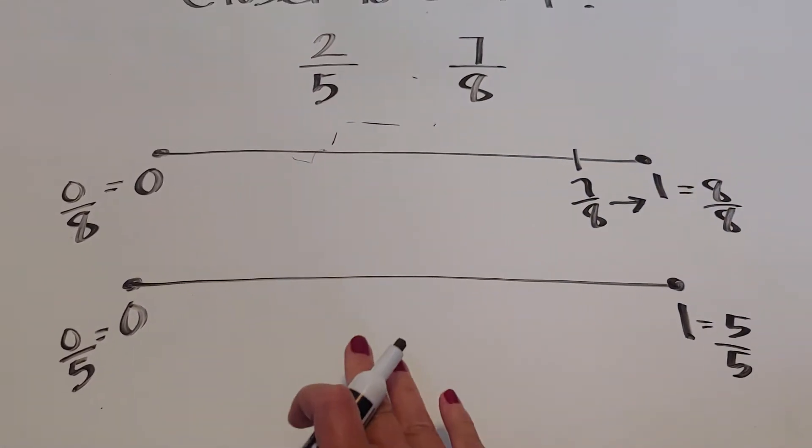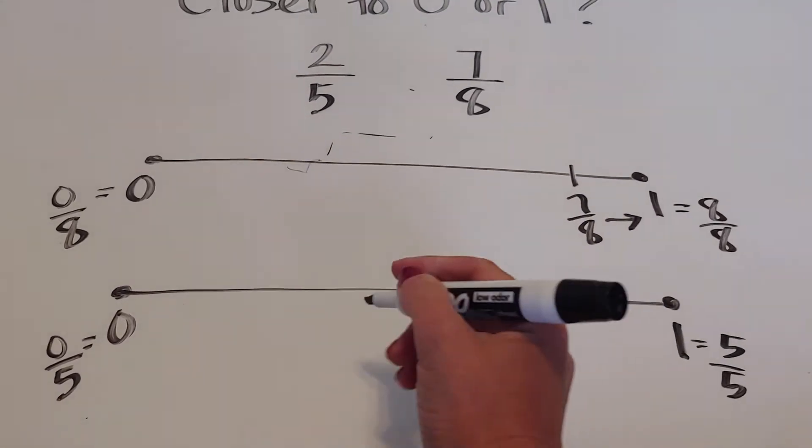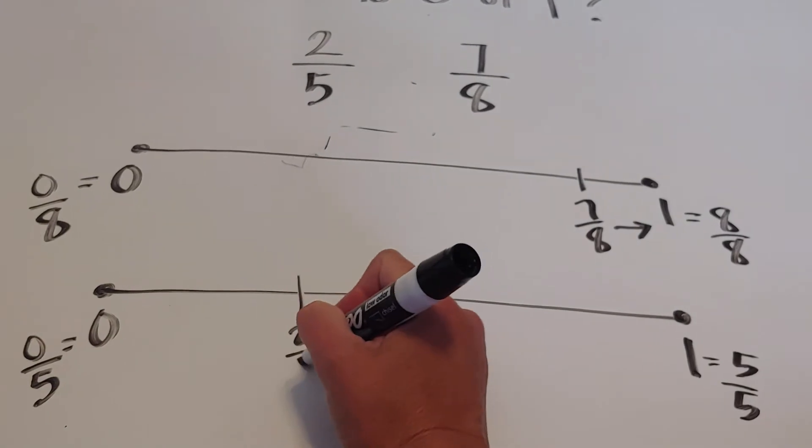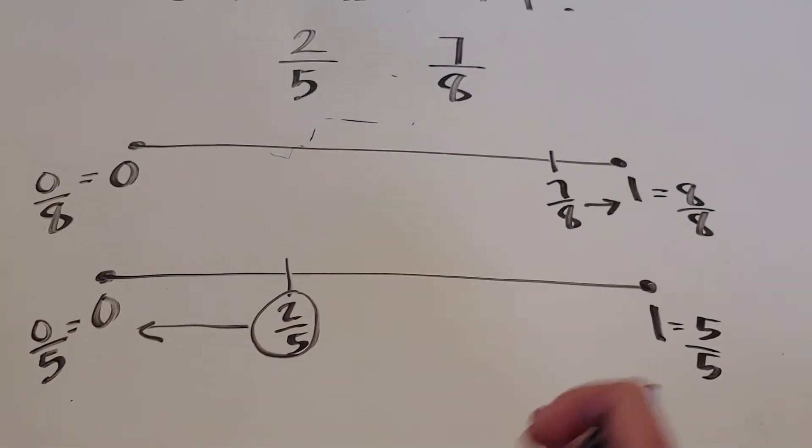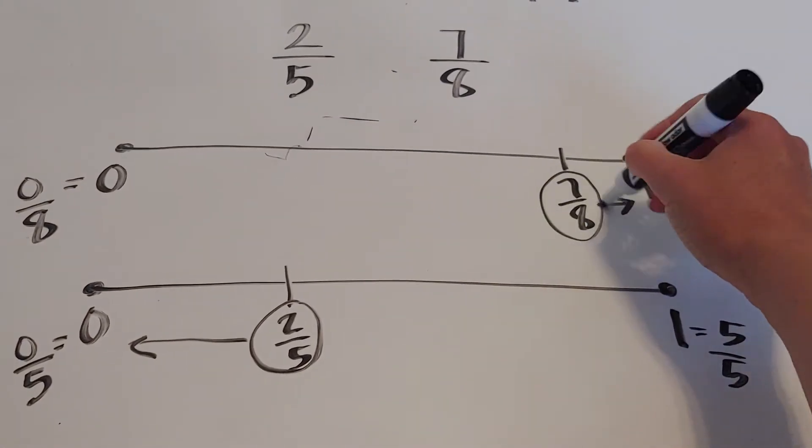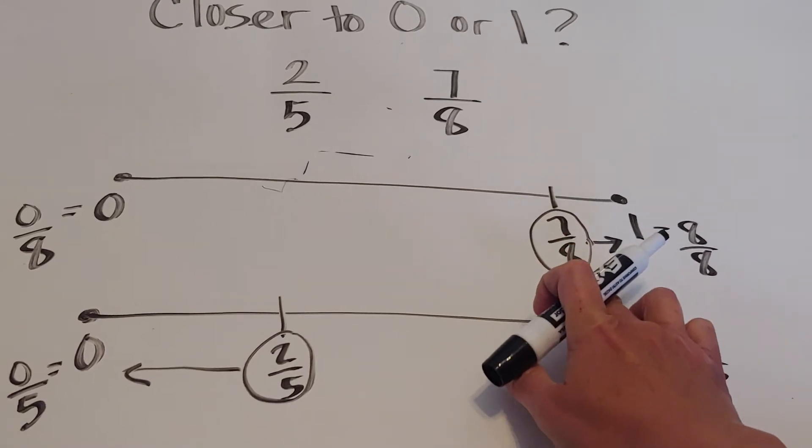Is two fifths closer to zero fifths or to five fifths? That's right, two fifths is closer to zero. Using this idea that seven eighths is closer to one and two fifths is closer to zero, we know seven eighths is bigger.